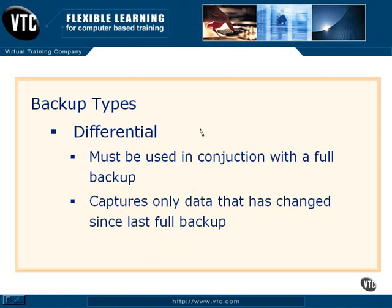Differential only captures data that's changed since that last full backup. It does that by setting an archive bit on every piece of data. It starts to look for an archive bit that has been set, because the full backup clears those bits, and then when data is changed, that bit is turned on. So the differential simply goes through, looks for bits that have been turned on, and backs that data up — and it does not reset it. Only the full backup resets that archive bit.